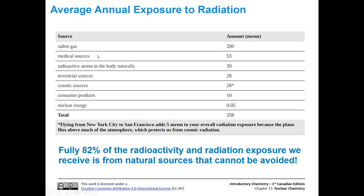Sources of radiation exposure include radon gas, medical sources, radioactive atoms naturally in the body, terrestrial sources, and cosmic sources. For instance, flying from New York City to San Francisco gives you 5 millirem of radiation exposure because the plane flies above the atmosphere, which normally protects us from cosmic radiation. Consumer products add about 10 millirem, and nuclear energy contributes 0.05 millirem. The average person is exposed to 358 millirem per year, and fully 82% of that radiation exposure comes from natural sources we cannot avoid.